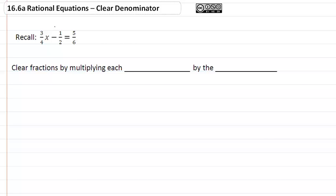16.6a rational equations - clear the denominator. We clear fractions by multiplying each term by the LCD.